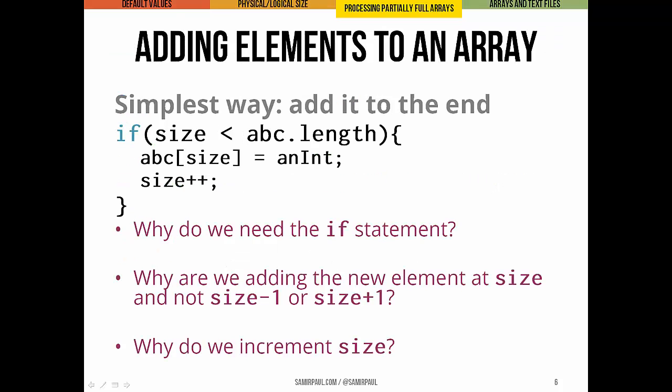Of course, in that slide we sort of waved our hands over adding things to the array. And the basic idea here is the simplest way to add something to an array is to just add it to the end after the last available item in the array. So the first thing you've got to do is check to see whether there's a cell even available. And then you've got to remember to increment the logical size. You can see we're doing that here with the size plus plus. As soon as size is equal to abc.length, we know the array's full. And the if statement is going to stop a range error from happening.